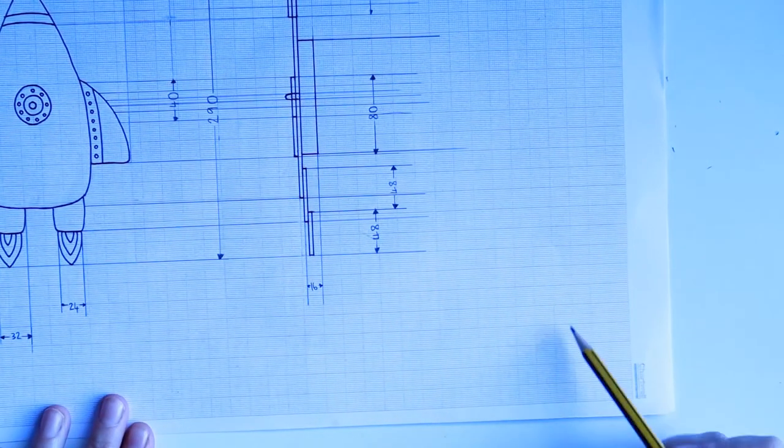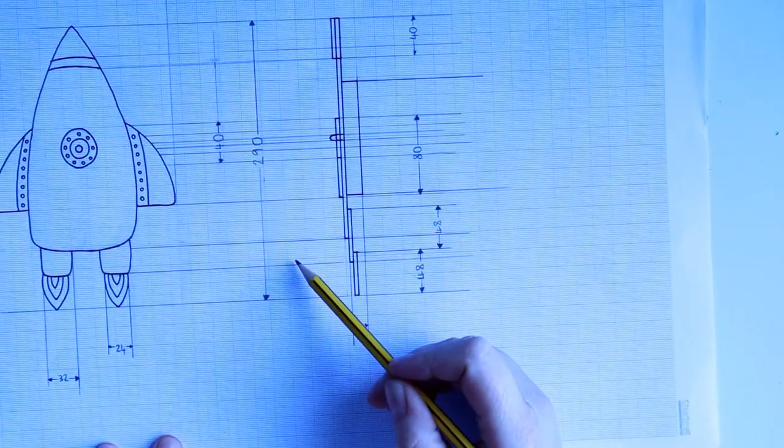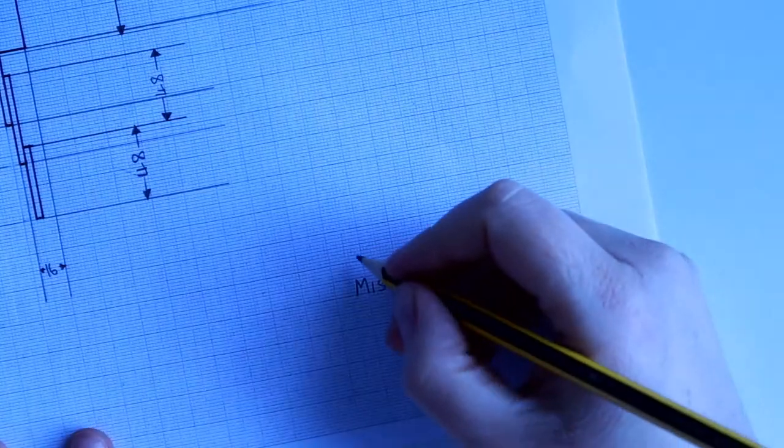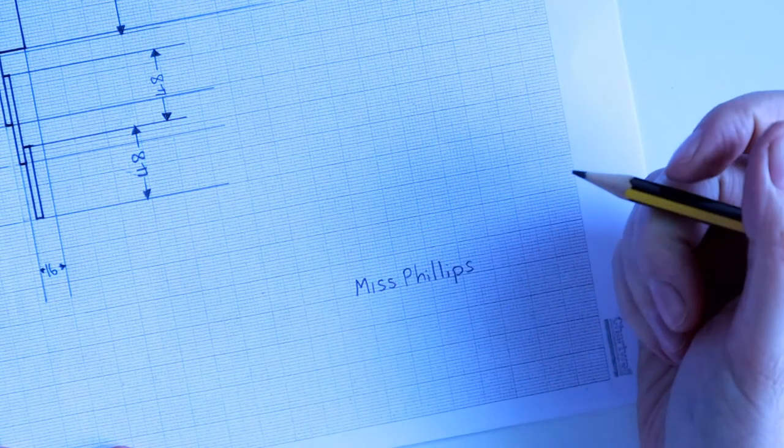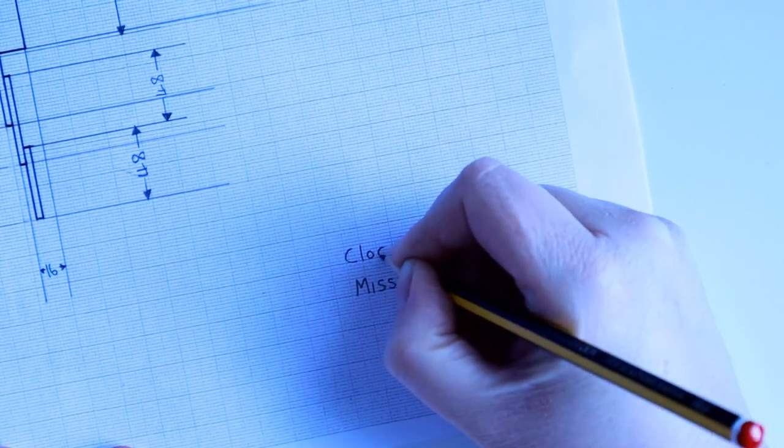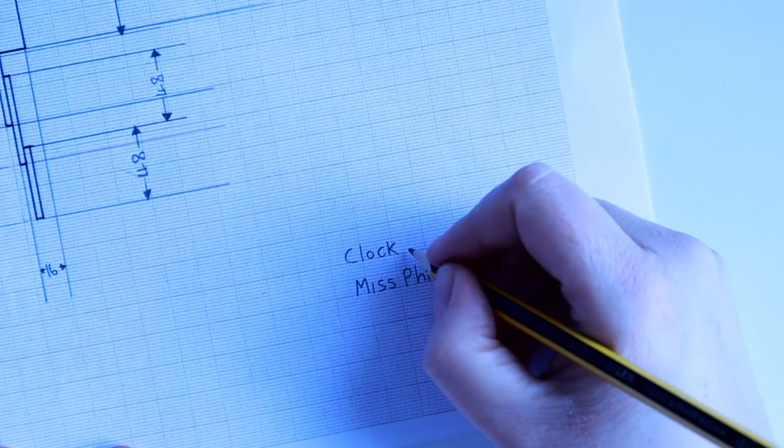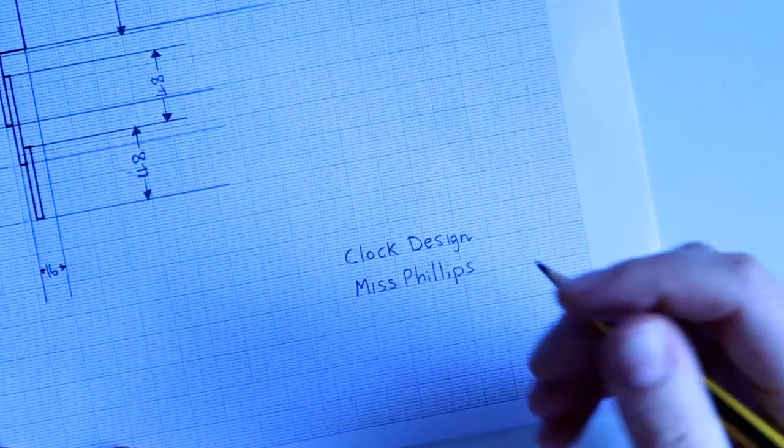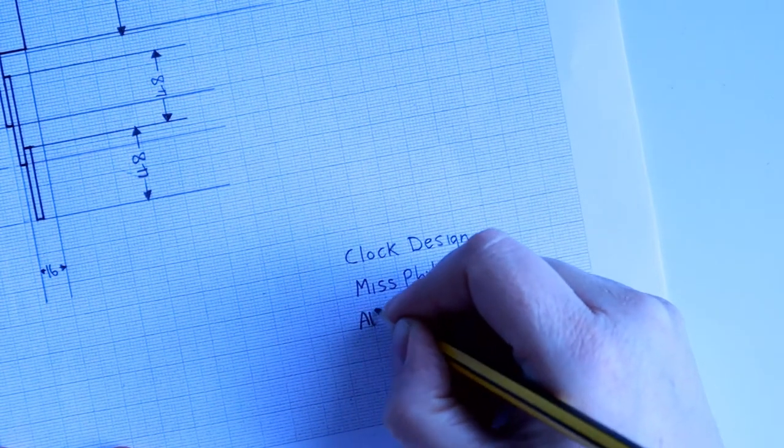Because what I'm going to do now is write in the corner that all of my measurements are in millimeters, along with my name. I'm also going to put a title on here. So I'm going to call it Clock Design. You might want to put Memphis Clock Design, or in my case I could put Space Rocket Clock Design. I'm also going to put all dimensions in millimeters.